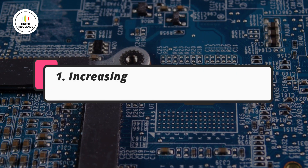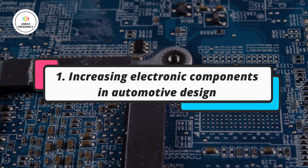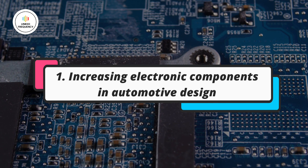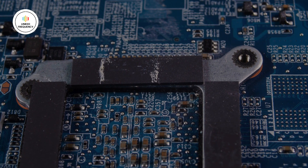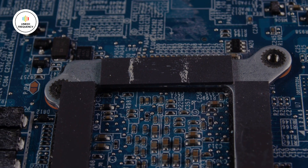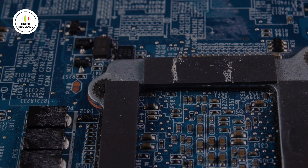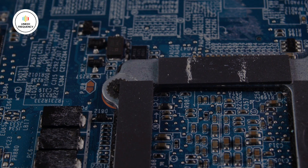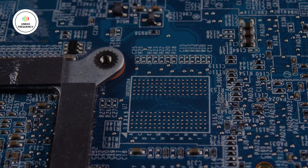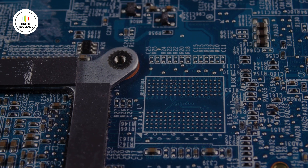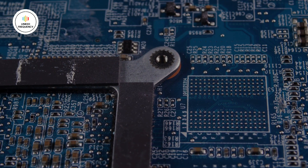The first point is increasing electronic components. As vehicles became more advanced and computerized, the number of electronic components and systems within vehicles increased significantly. These components — such as engine control units, transmission control units, ABS systems, airbags, and others — needed a reliable means of communication to exchange information and coordinate their actions.